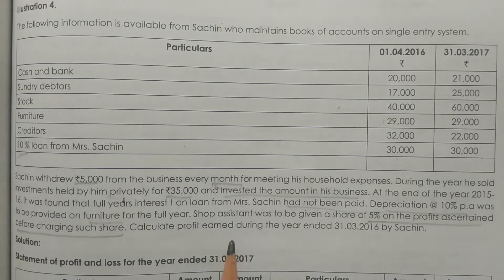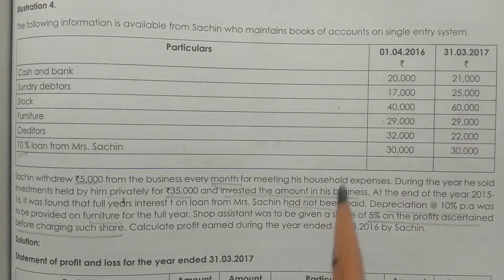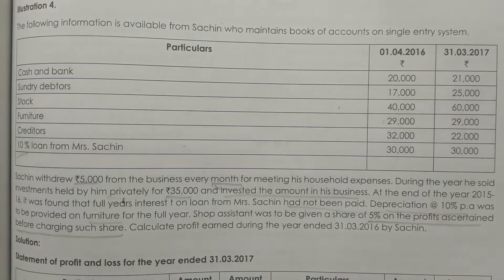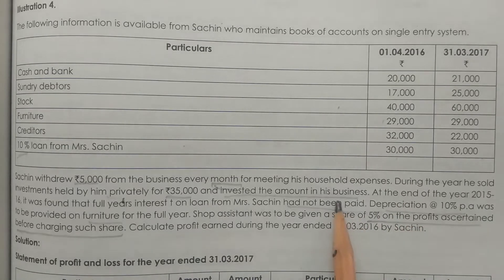We have a Statement of Profit and Loss to prepare. We need closing capital, opening capital, drawings, and adjustments. The adjustments include depreciation on furniture and interest on the loan, from which we derive the net profit.